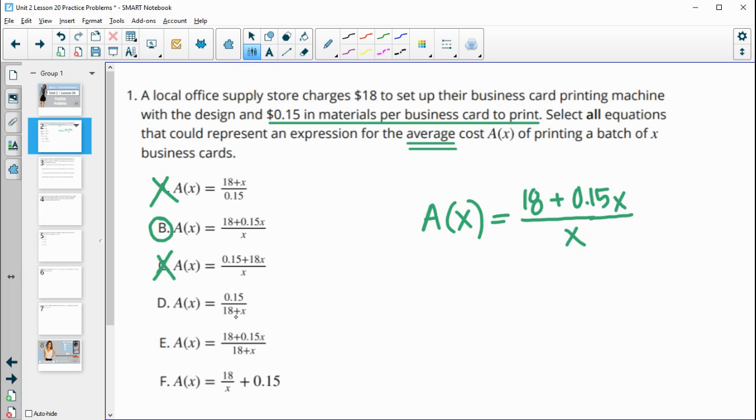Part D has the 18 on the bottom. That's bad. Part E divides by 18 plus the business cards. So that's wrong.